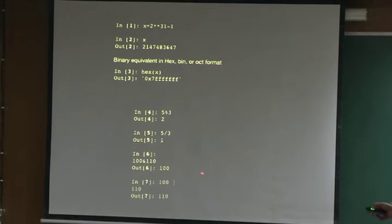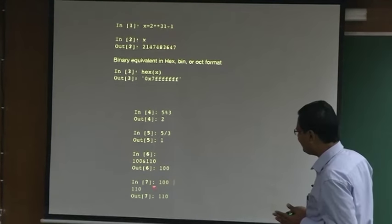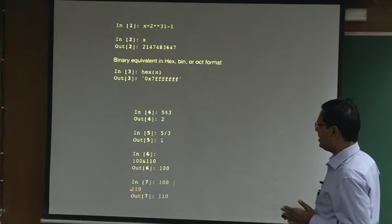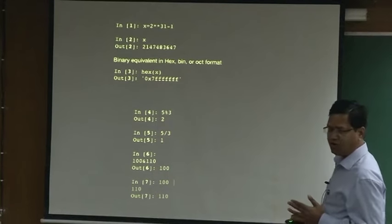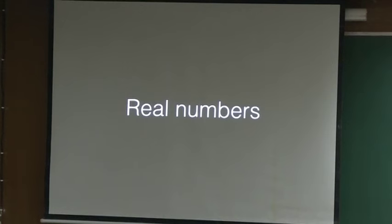These are remainder operations. These are bit operations - I will skip. This is AND and this is OR. 1 0 0 OR 1 1 0 will give you 1 1 0 for OR operation, and AND operation you probably know from binary operation.